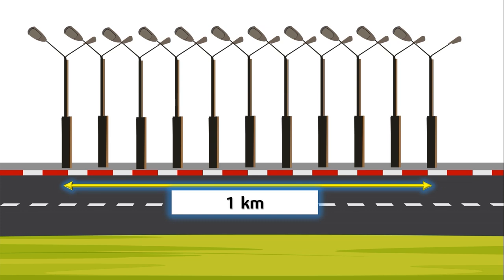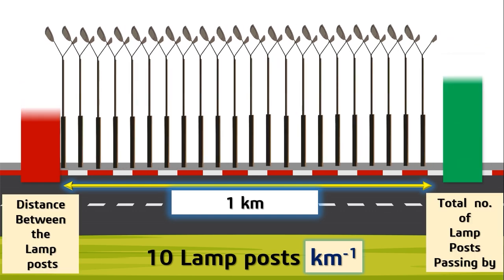Then the unit of that particular quantity which you are measuring will be kilometer inverse, that is 10 lampposts for each kilometer. Now clearly, if the spacing between the lamppost decreases, definitely the quantity that we are measuring - the number of lampposts per kilometer - will increase. I hope up to that point no confusion is there.